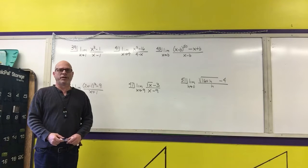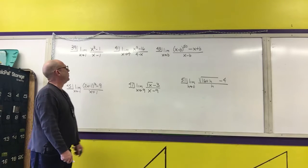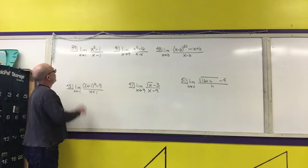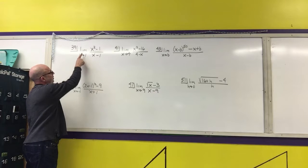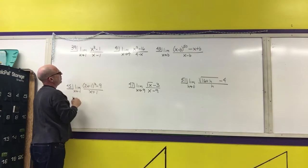For the last video of section 2.3, I'm going to cover some of the algebraic methods for computing limits. First problem is problem 39 from the text. The limit as x approaches 1 of x squared minus 1 over x minus 1.